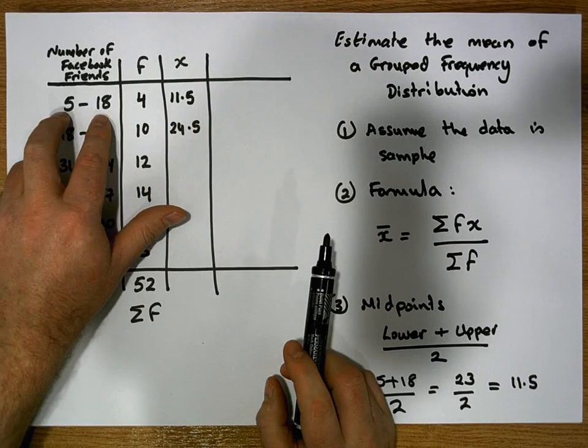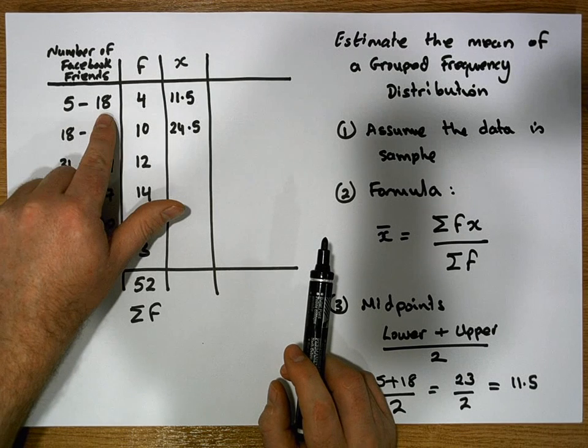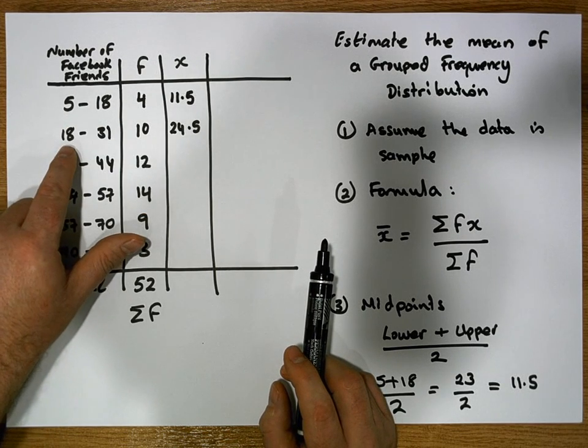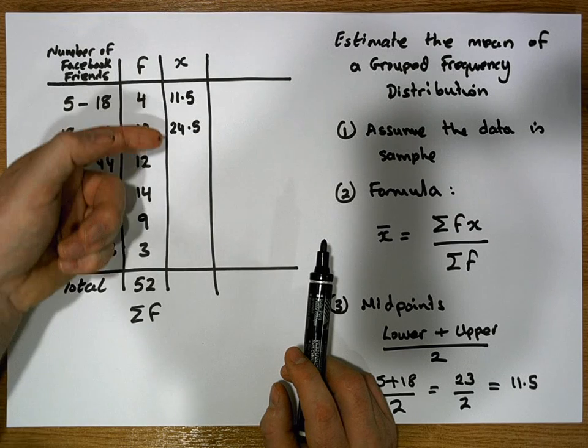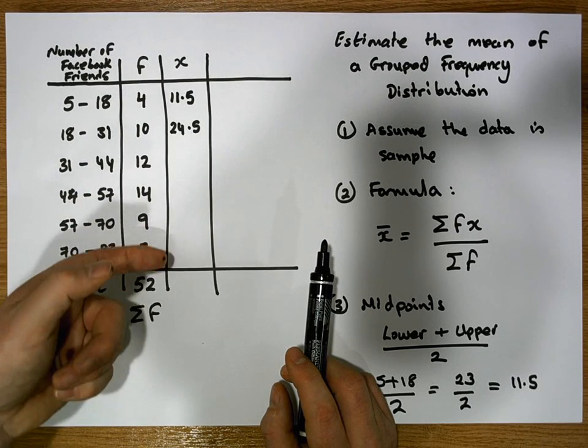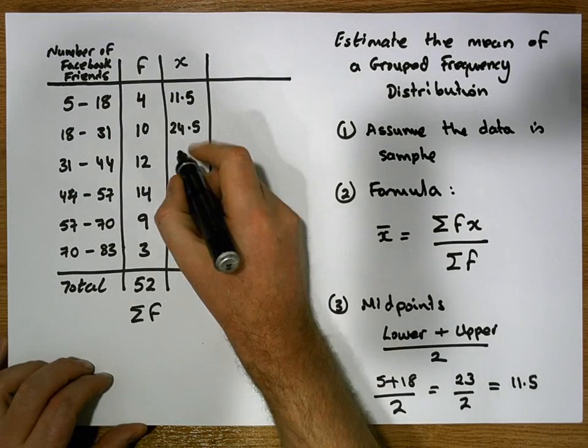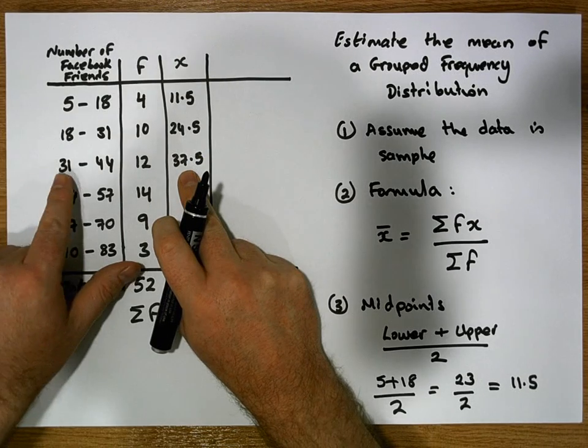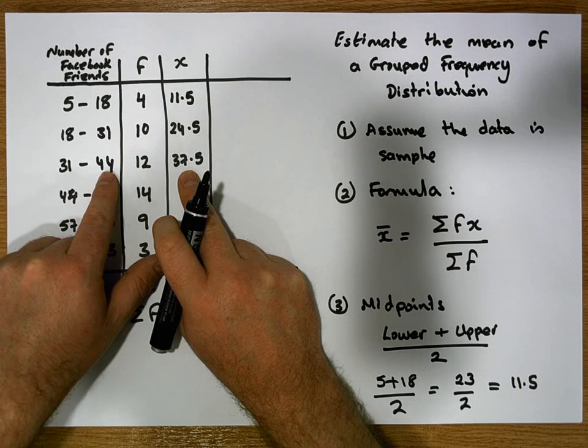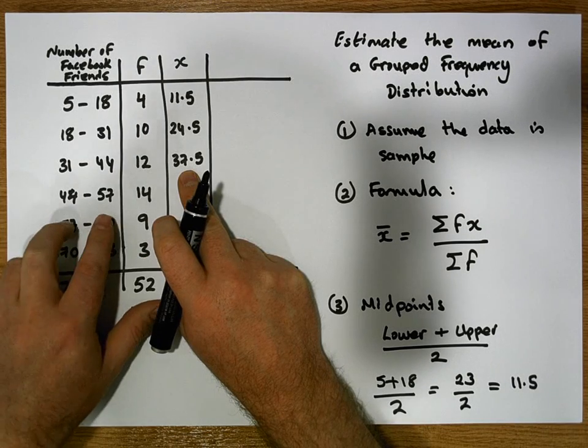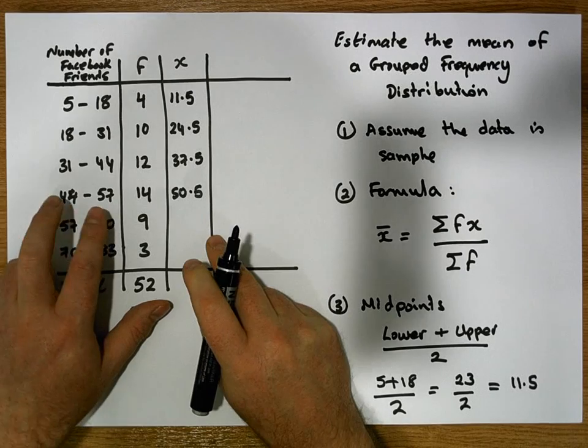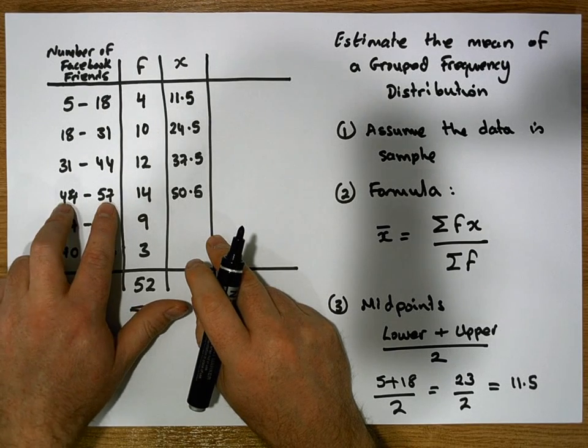What we can notice is because our intervals are of width 13 and the upper bound of this class is the same as the lower bound of the next class, these particular values are simply going to be a distance of 13 apart. So the next value in the distribution is 37.5, which is the lower bound plus the upper bound divided by 2. The next value is 50.5, which is 44 + 57 divided by 2.